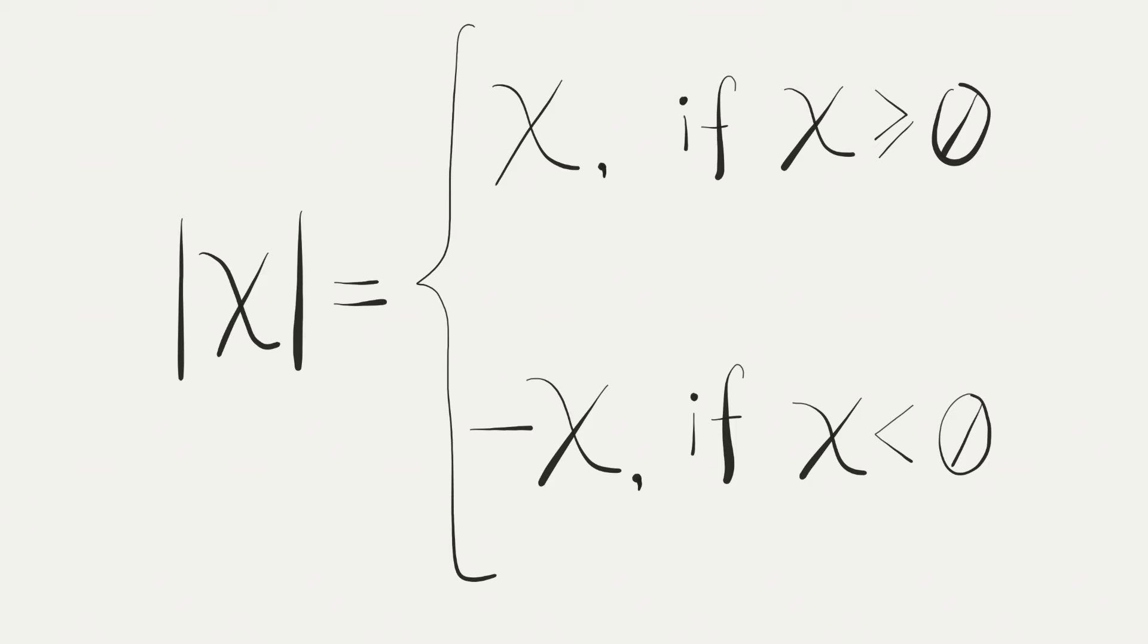Check this out. In mathematics, there is a concept of absolute value, and this is how it's defined. Don't worry, it's actually simple. If a number is positive, then its absolute value is the same as the number. If a number is negative, then its absolute value is the negation of the number. Basically, drop the minus if it's there and that's it.